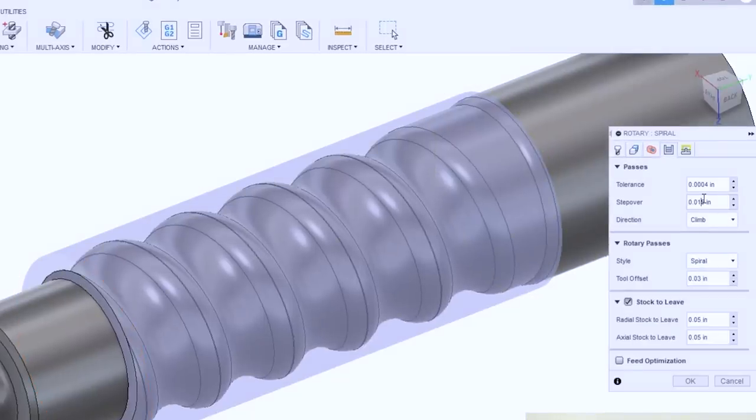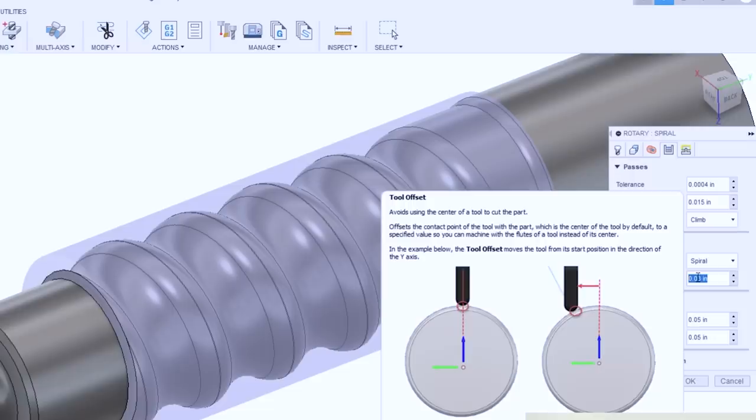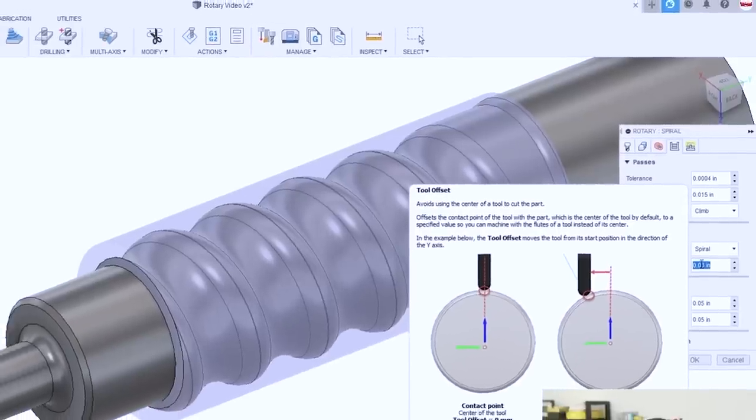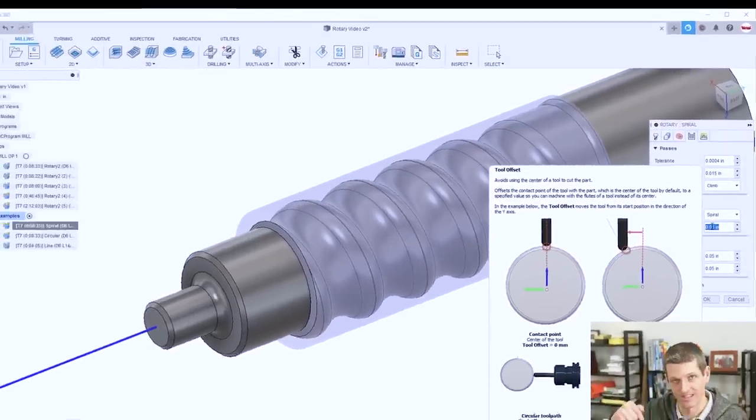And the stepover will control basically the resolution of the detail. As you decrease the stepover, you'll get less cusping or scalloping, but at the expense of a longer toolpath. You can also do something really cool with this toolpath, which is tool offset. The software can handle compensating in Y so that you're cutting more with the side of the tool than you are with the tip.